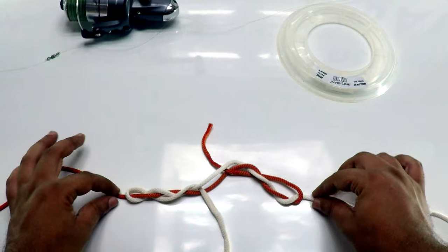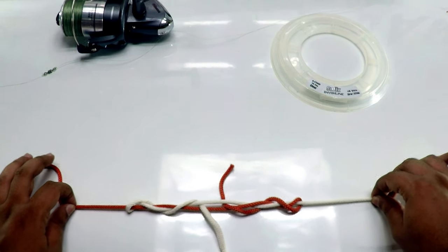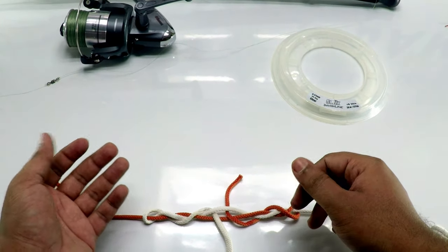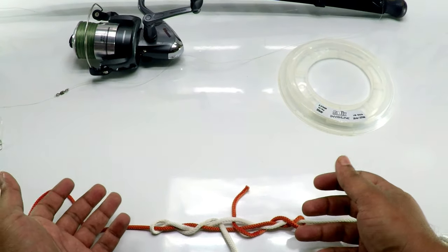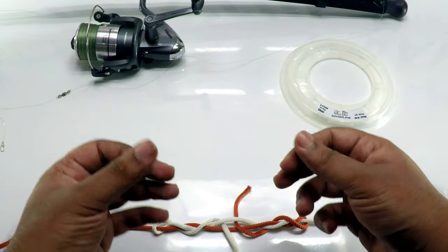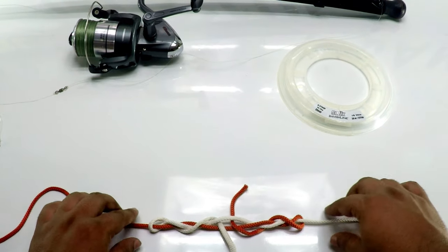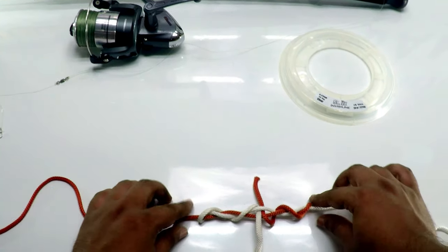Then slowly pull it out. For a braid line, you need to wet it a little bit—apply spit or water so it's moist and pulls easily.